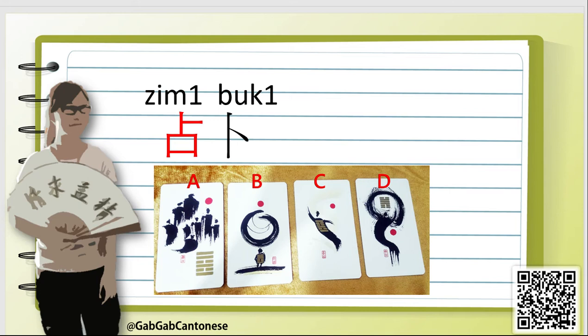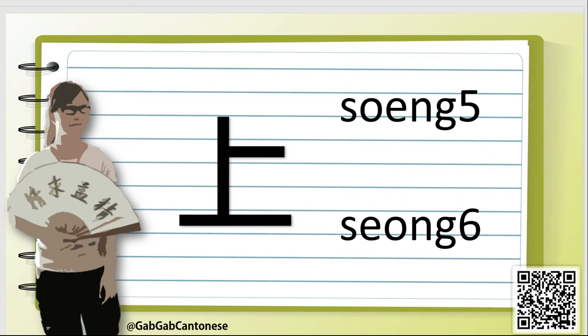We can form a vocabulary using the character 卜 to make a compound word. Now let's move to the second character. This character is a multi-pronunciation character — we can either pronounce it as 上 or 上.